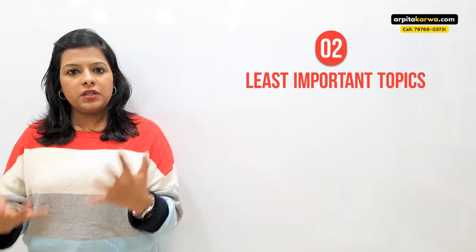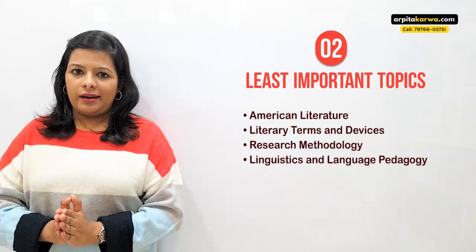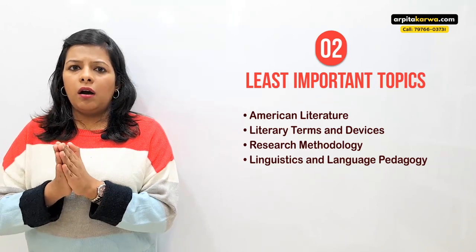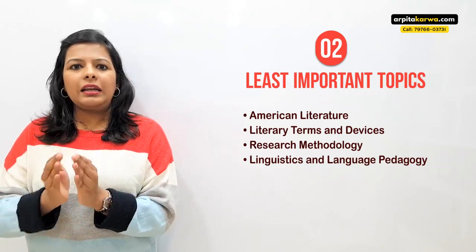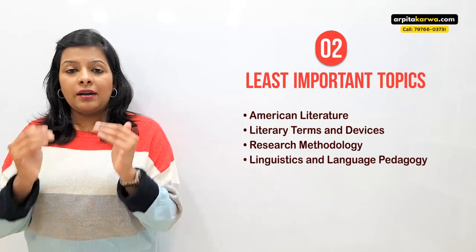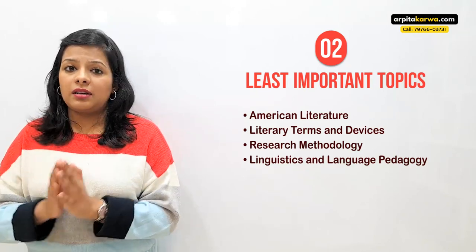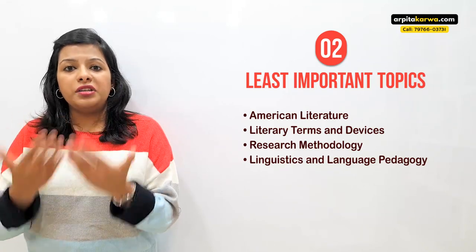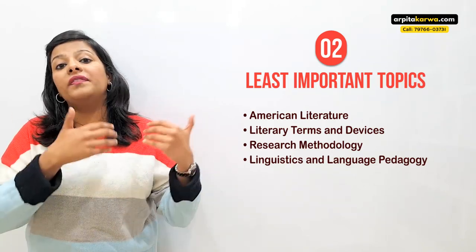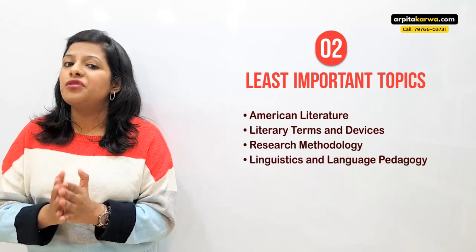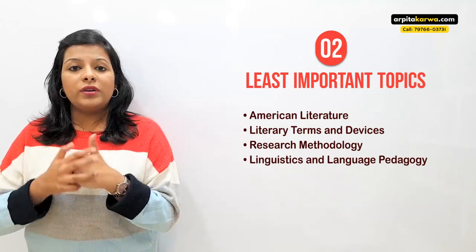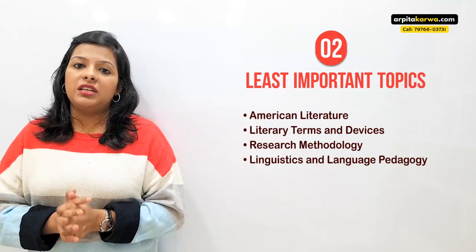Coming to the least important areas: the first is American literature. From the trend I've observed, not more than three to four questions are asked from American literature, yet there are more than 70 writers to cover. If you're new, you can skip these writers and focus instead on the important post-colonial and European writers. The second area you can skip is literary terms and devices.